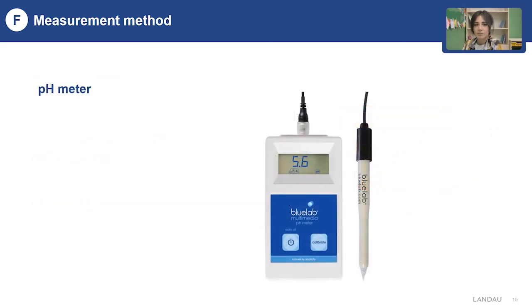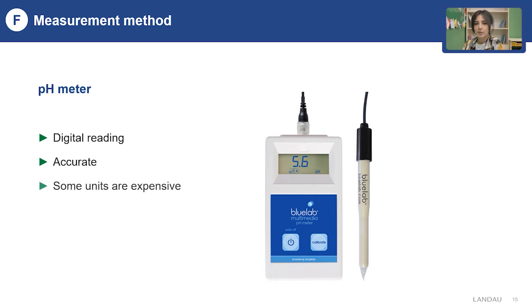The second measurement method is the pH meter. It gives a digital reading and is more accurate. The strips and units can be expensive, but this method is easy and sanitary.